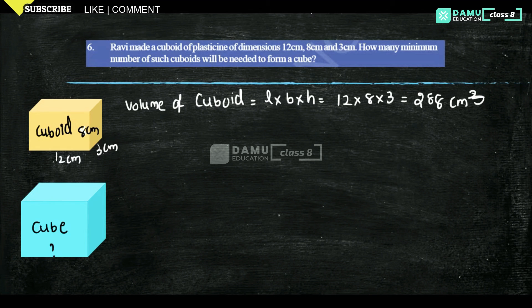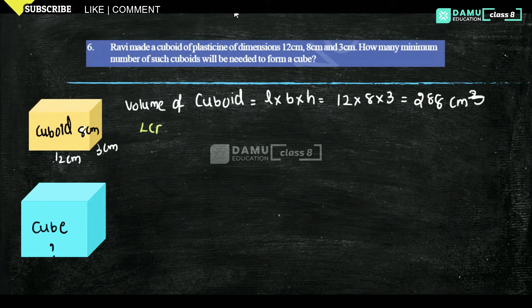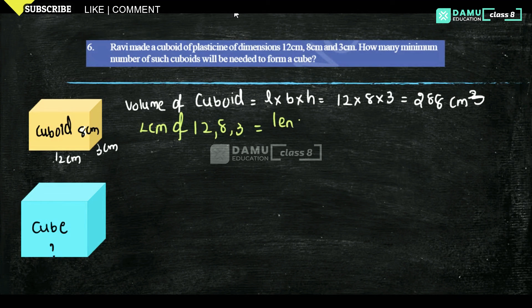Next, we find the edge of the cube, which is the least common multiple — LCM of 12, 8, and 3 — and that will equal the length of the cube.